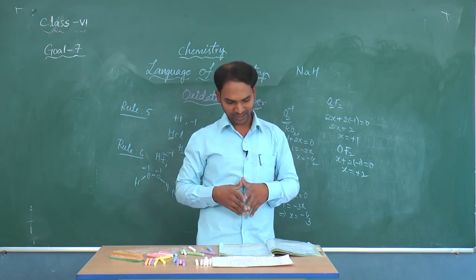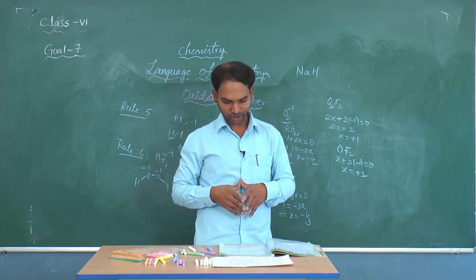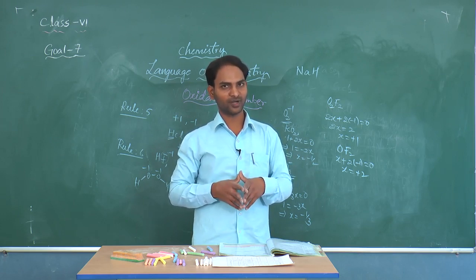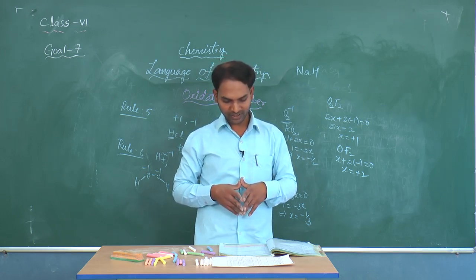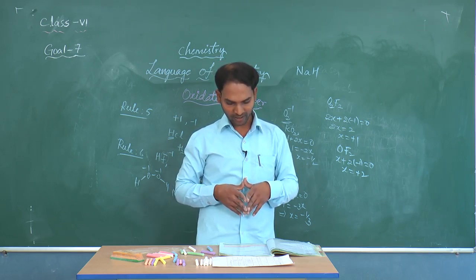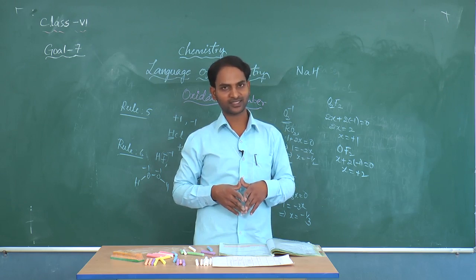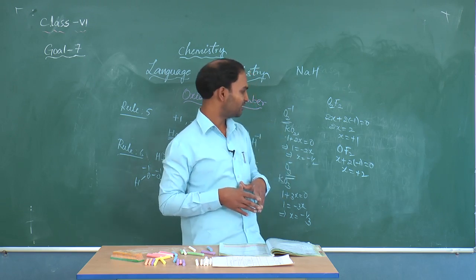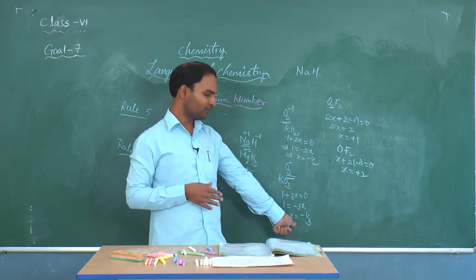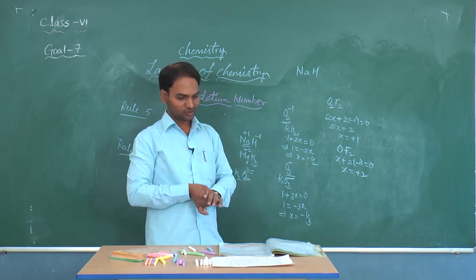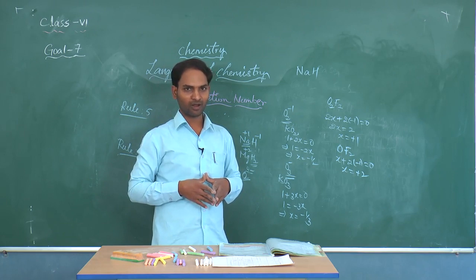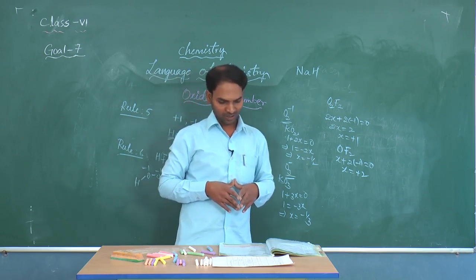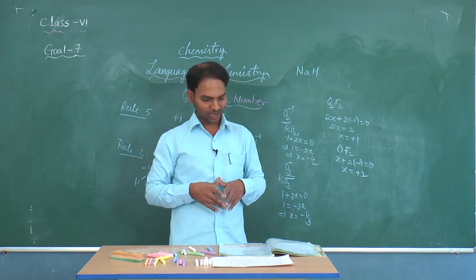In the statement-type questions: Statement A says the oxidation number of hydrogen in metal hydrides is +1 — but it should be -1, so Statement A is wrong. Statement B says the oxidation number of fluorine in all its compounds is -1 — that is correct. Statement C says the oxidation number of oxygen in ozonide is -1/3 — that is also correct. So B and C are right, making option C the answer.